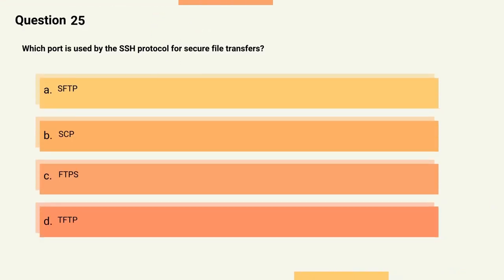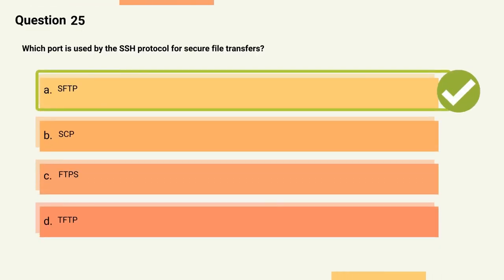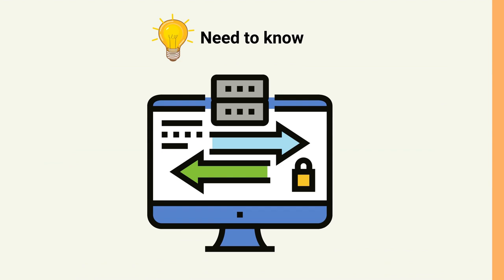Question 25: Which port is used by the SSH protocol for secure file transfers? Options: A) SFTP, B) SCP, C) FTP, D) TFTP. The correct answer is Option A, SFTP. Explanation: SSH File Transfer Protocol (SFTP) uses the SSH protocol and typically uses port 22 for secure file transfers.